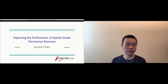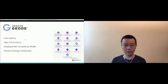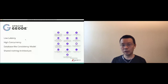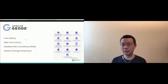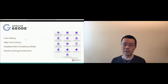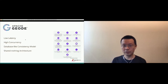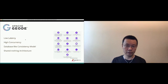Apache Geode offers a low latency and high concurrency data management solution. It has a database-like consistency model and shared nothing architecture — it's more than a cache. You can see on screen some of the features: application partitioning, data persistence to hard drive, superior in-memory performance, function execution, transactions, OQL, event processing, clustering, and cross-geographic replication.